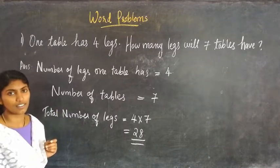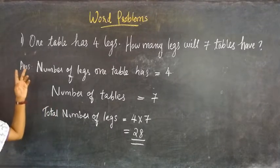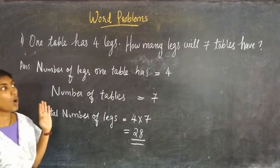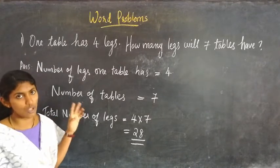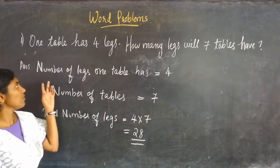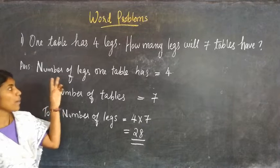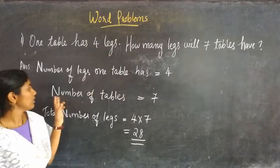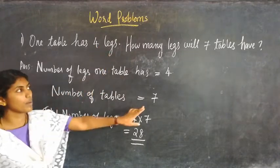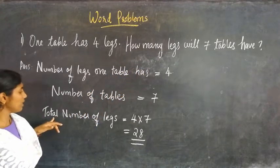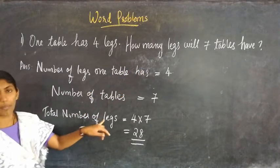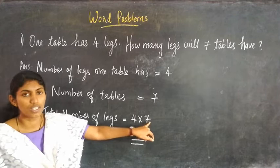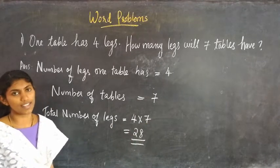So it's like this: one table has 4 legs, how many legs will 7 tables have? Number of legs one table has: 4. Number of tables: 7. We have to find the total number of legs. For that we multiply 4 into 7, that is equal to 28.